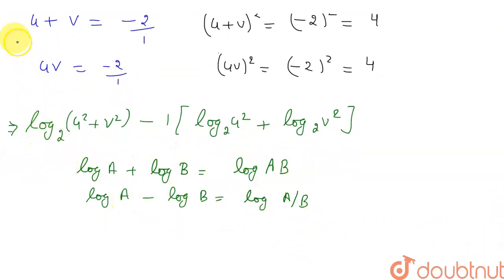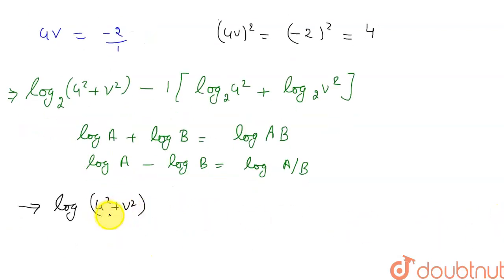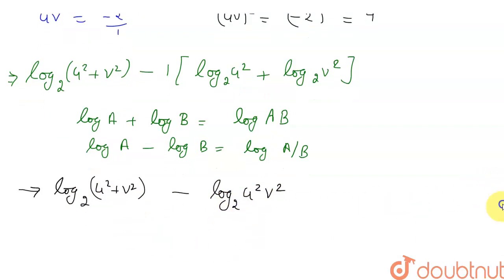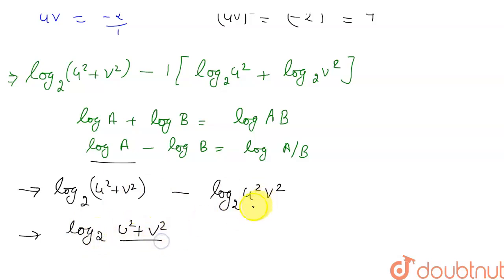Using these log properties, the expression becomes log base 2 of (u² + v²) minus log base 2 of (u²·v²). Applying the subtraction property, this simplifies to log base 2 of (u² + v²) divided by (uv)². We already know (uv)² = 4, but we still need to find u² + v².